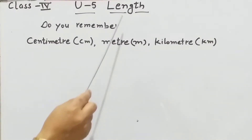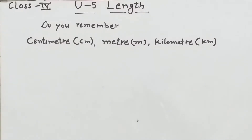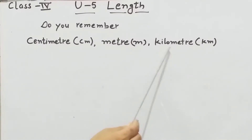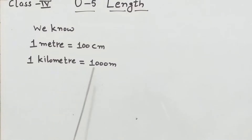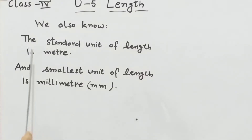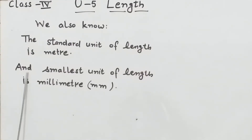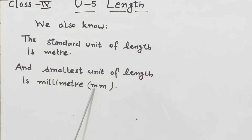The very basic part of this topic is units of length. We have centimeter, denoted by cm, meter denoted by m, and kilometer denoted by km. We know 1 meter is equal to 100 centimeters, and 1 kilometer is equal to 1000 meters. The standard unit of length is meter, and the smallest unit of length is millimeter, denoted by mm.